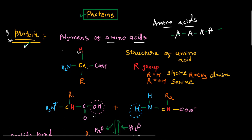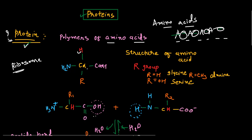The formation of proteins happens on the ribosomes. By the ribosome, peptide bonds are formed — these are the C-O-N-H bonds. The amino acids make a sequence and by this bonding they are attached to each other, making the proteins.